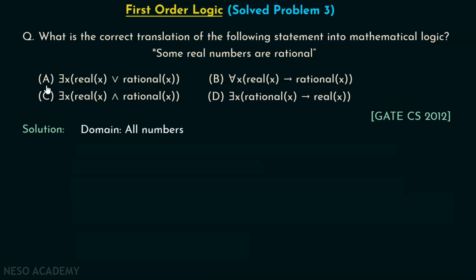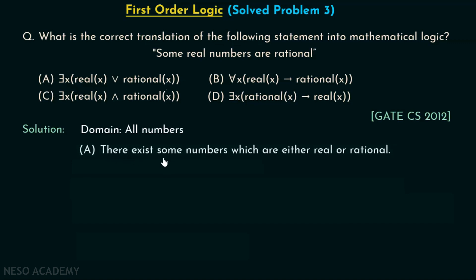Here is the first option, option A: there exists x, Real(x) or Rational(x). This can be written as: there exist some numbers which are either real or rational. This is not a correct option because you are talking about real or rational, which is not the correct interpretation.